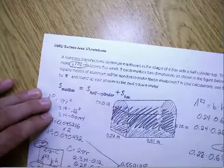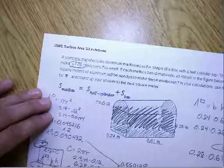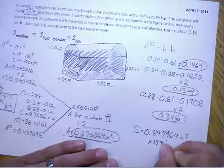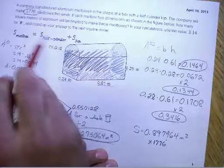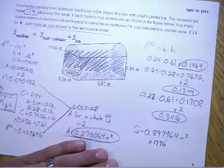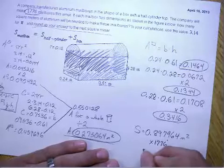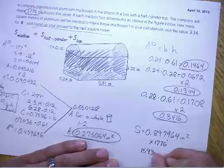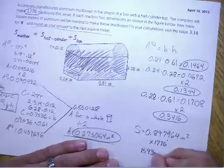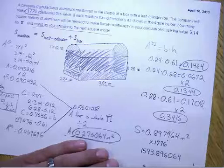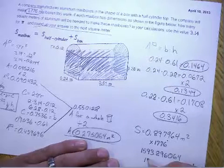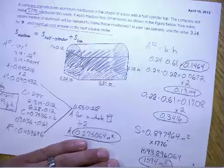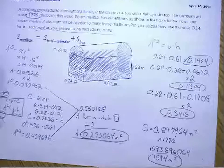But, I am making 1,776 mailboxes. So, I'm going to take that surface area number that we have, and I'm going to multiply it by 1,776. And, in the direction, it says round our answer to the next square meter. I'm going to multiply it. I first get 1,593 and 0.896064. But, I need to round to the next square meter. So, 1,594 meters squared would be our final answer for this problem.